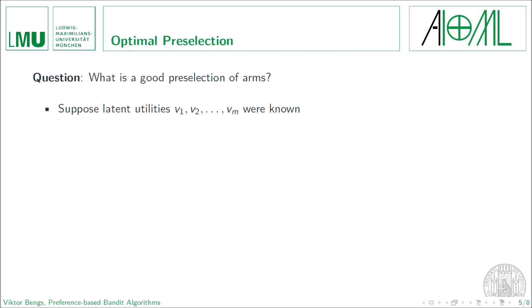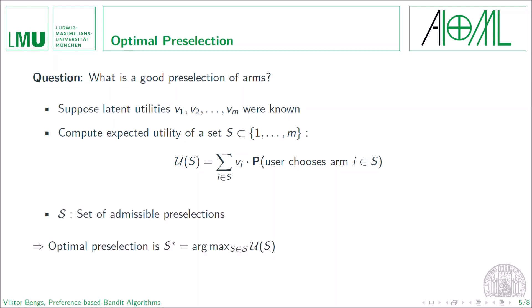Now a tempting question in this regard is what is actually a good or even an optimal preselection of arms? And for this purpose, let us assume for the time being we have full knowledge about the underlying utilities of the arms. Then a natural approach is to consider the expected utility of a preselection, which is given by the utility of an arm multiplied with the probability of being chosen and this product summed up over all arms in a preselection. Therefore, a preselection is called optimal if it has the maximum expected utility among all admissible preselections.